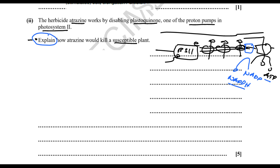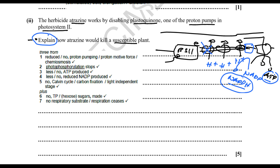If plastoquinone is disabled, you would prevent the movement of hydrogen ions across the membrane from the stroma into the thylakoid interior, preventing the production of ATP. That ATP would not be used to regenerate RuBP. Additionally, production of NADPH would stop, which would also not be used to regenerate RuBP. All of these things would lead to stopping of the light-independent reactions, meaning the plant would be unable to fix sugars — there would be no chemiosmosis because there would be no proton pump.